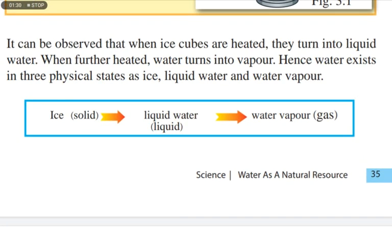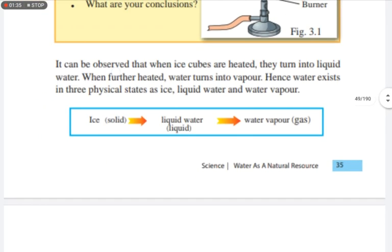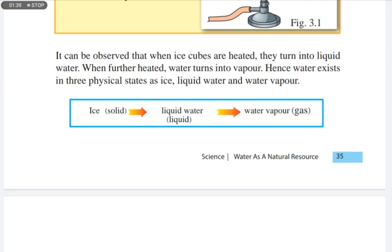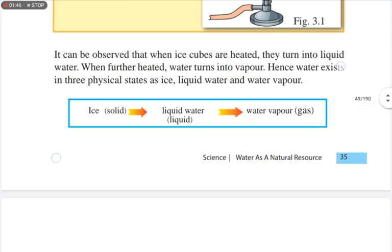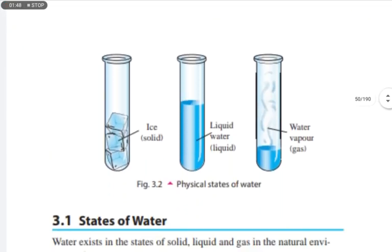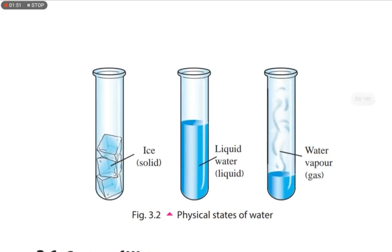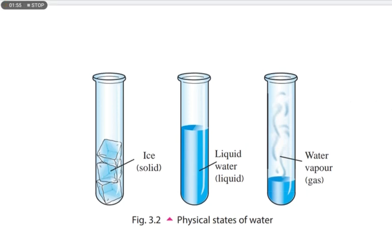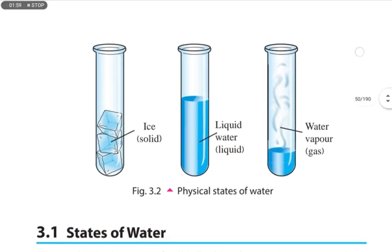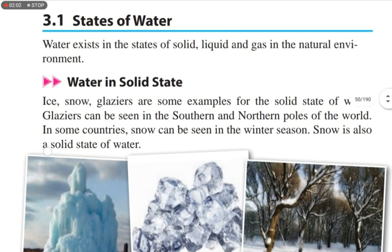Carefully look at this figure: ice turns into liquid water, then liquid water turns into water vapor. Ice is the solid state, liquid water is the liquid state, and water vapor or steam is the gaseous state of water. This picture shows all three physical states of water: ice, liquid water, and water vapor.